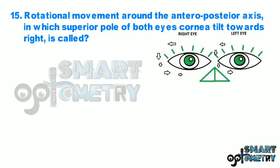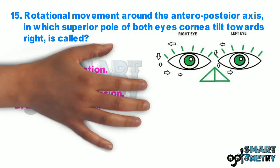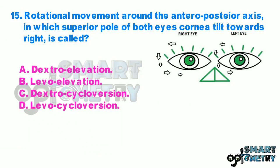Question 15. Rotational movement around the anterior-posterior axis in which the superior pole of both eyes' cornea tilts towards the right is called: A. Dextro elevation, B. Levo elevation, C. Dextrocycloversion, D. Levocycloversion.